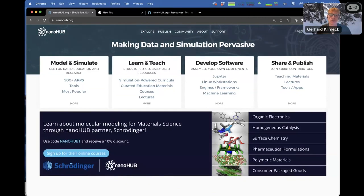Nanohub is all about making data and simulation pervasive. We want to give modeling and simulation tools and educational materials that normally would be very hard to obtain. We have over 500 apps and tools in Nanohub all around nanotechnology. You can conduct research with it and you can also use it for learning and teaching.